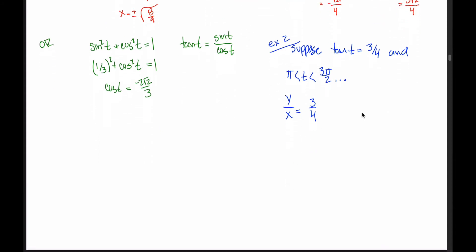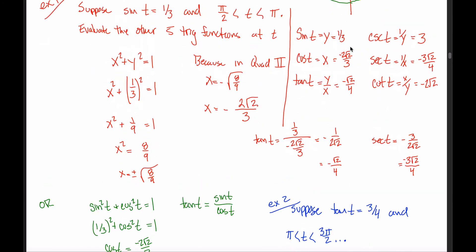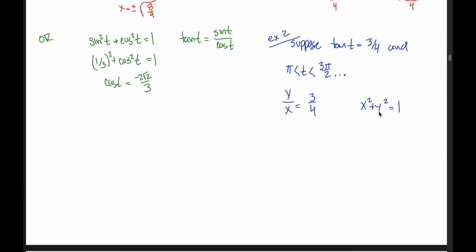So how do we solve it? We use two equations: x² + y² = 1 (the unit circle) and y/x = 3/4 (since tangent of t = y/x). Two equations and two unknowns. We solve one equation for one variable and substitute into the other. Solving the second equation for y gives y = 3x/4. Plugging that into the unit circle equation: x² + (3x/4)² = 1, giving x² + 9x²/16 = 1.